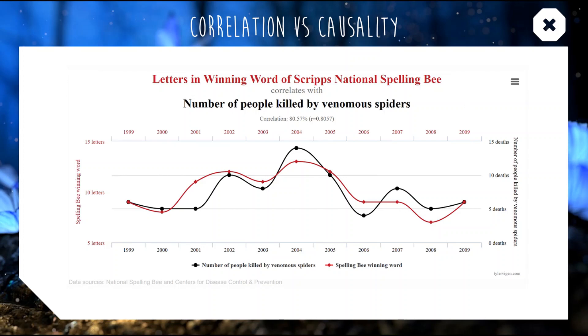A correlation of 80% — very similar-looking graphs — but if you can find any link between the number of letters in a word and venomous spider bites, I don't think you'll find one. Really close correlation, no causality, just a massive coincidence.